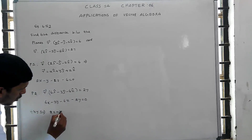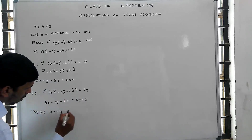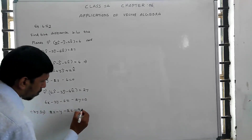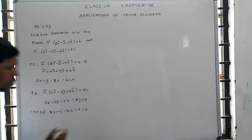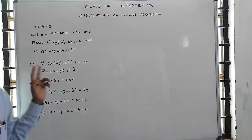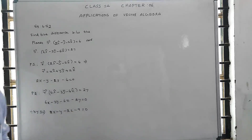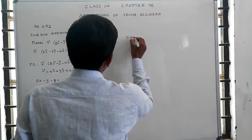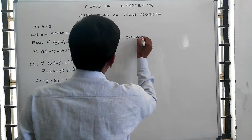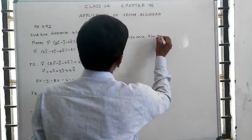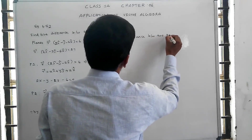After simplification, the Cartesian form gives: 2x − y − 2z − 9 = 0. Now we apply the formula for the distance between two parallel planes.